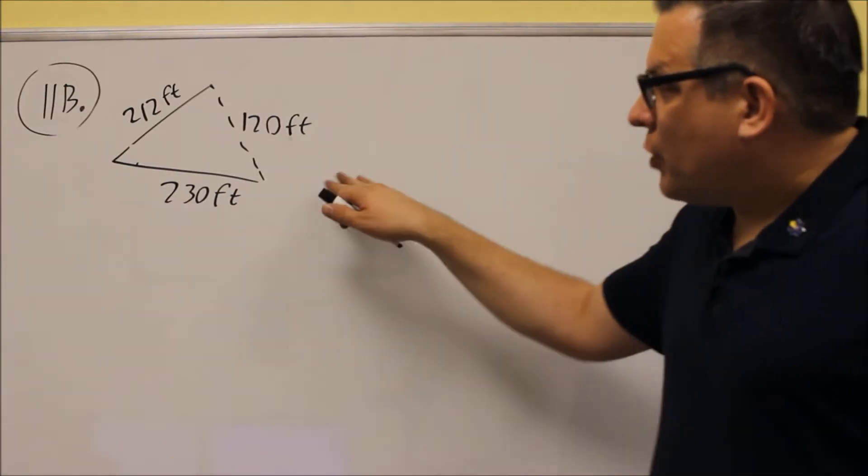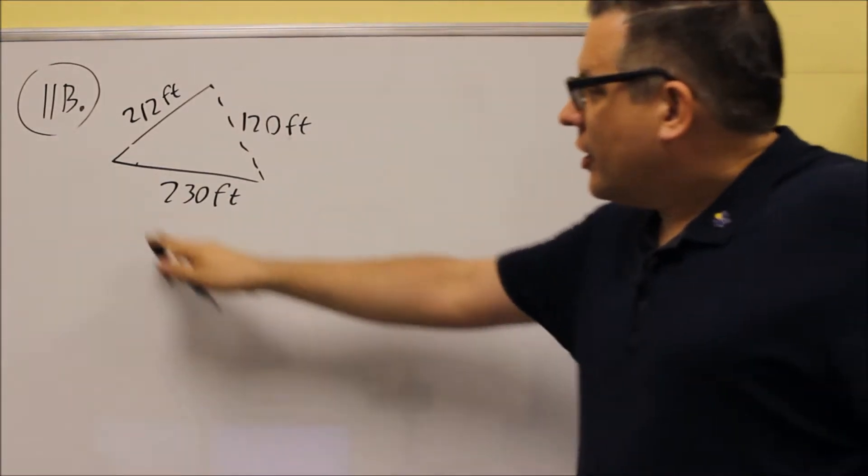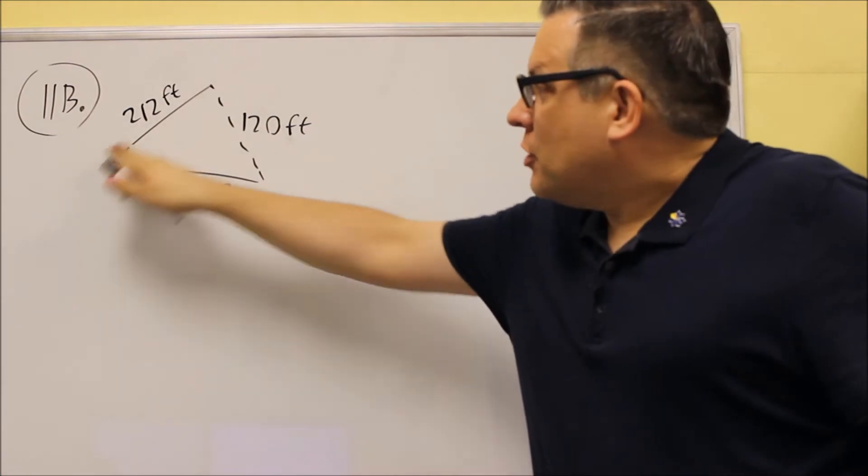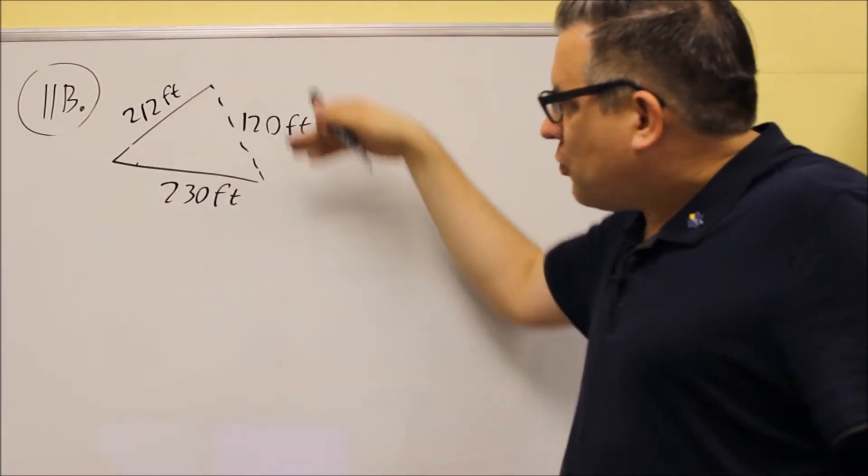For 11B, we have a picture that's been drawn of a barge that's here. It's being pulled by two tugboats at this point and this point.